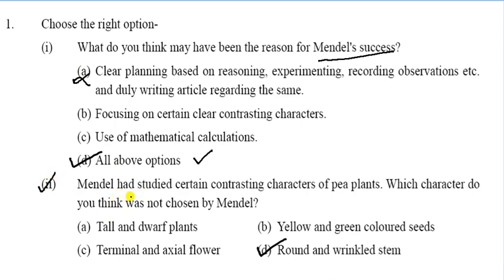Question 2: Mendel had studied certain contrasting characters of pea plants. Which character do you think was not studied by Mendel? Options: tall and dwarf plants, yellow and green color seeds, terminal and axial flowers — none of these were the answer. Round and wrinkled stem — that one is the correct answer.